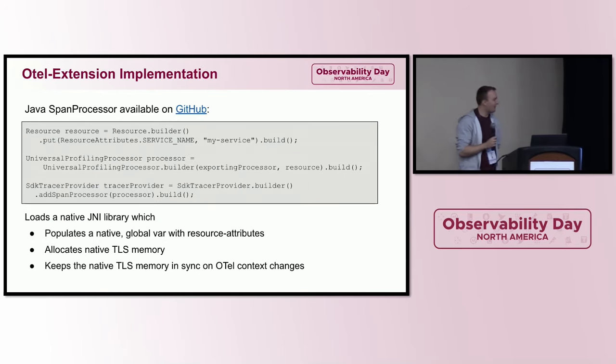The extension registers a listener so that whenever your trace context changes on a thread, that change is propagated to the native thread local storage. For Java there is a new thing called virtual threads which makes things a bit more difficult because Java threads don't exactly correspond anymore to platform threads. But that also works because the native library takes care of keeping the native thread local storage in sync whenever the virtual thread switches its carrier.